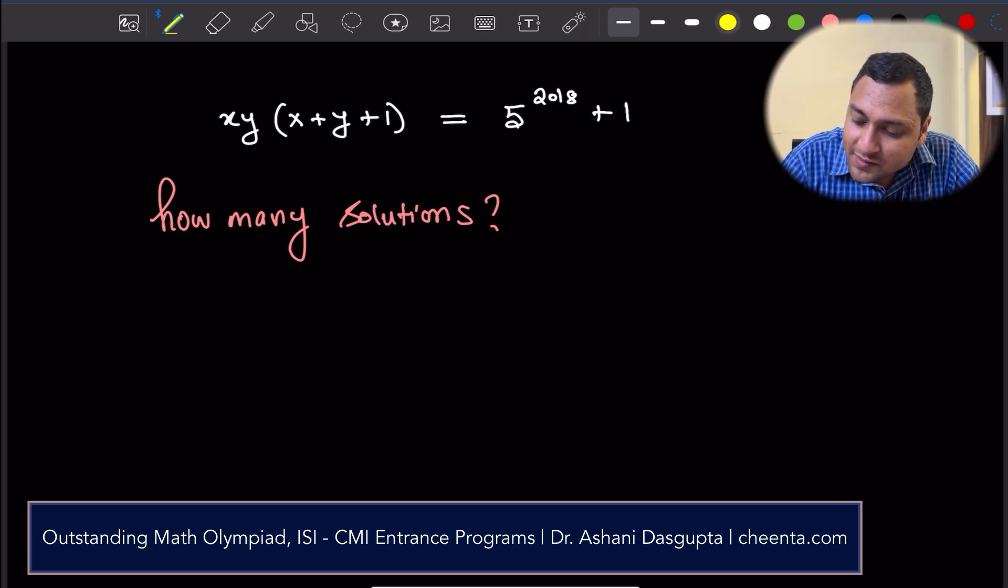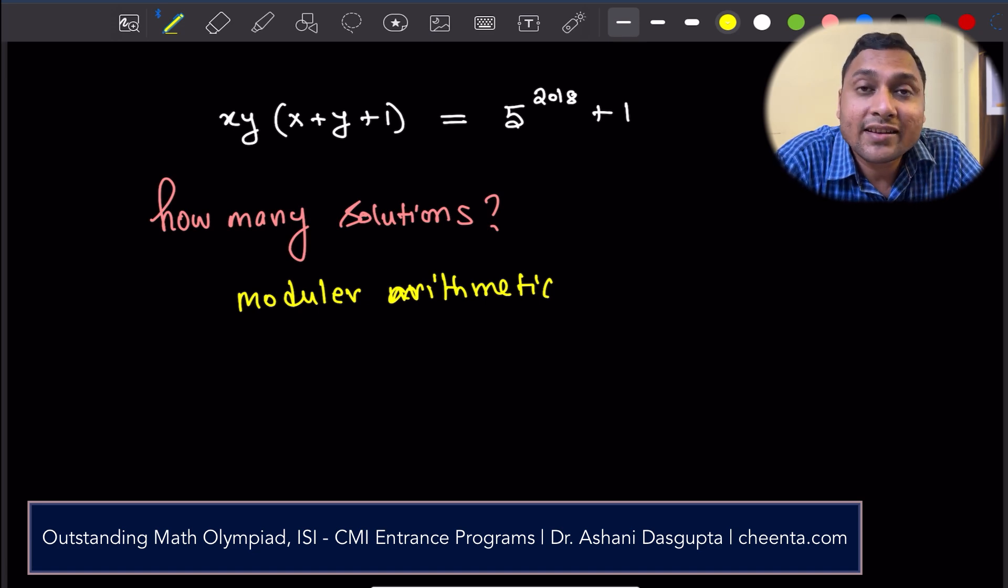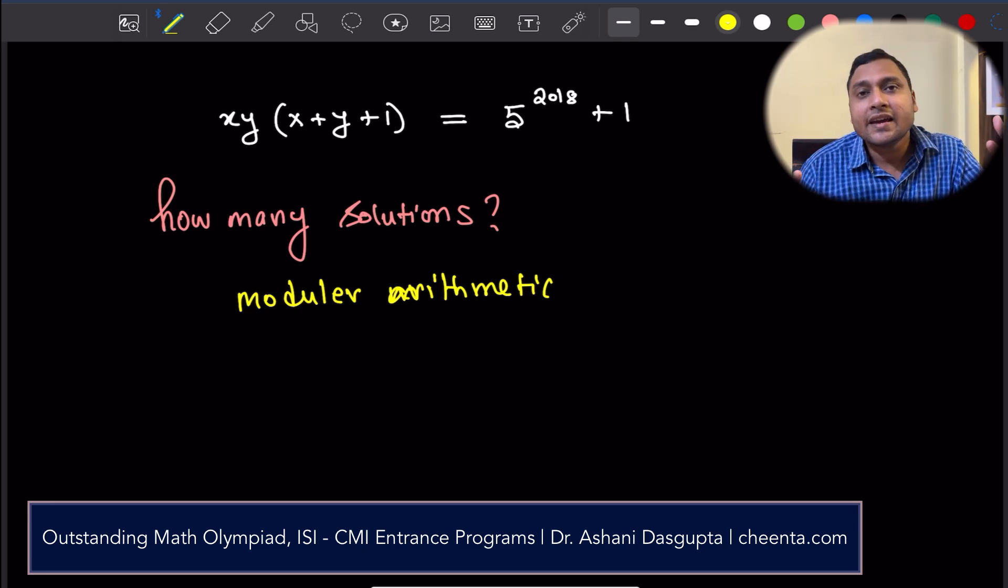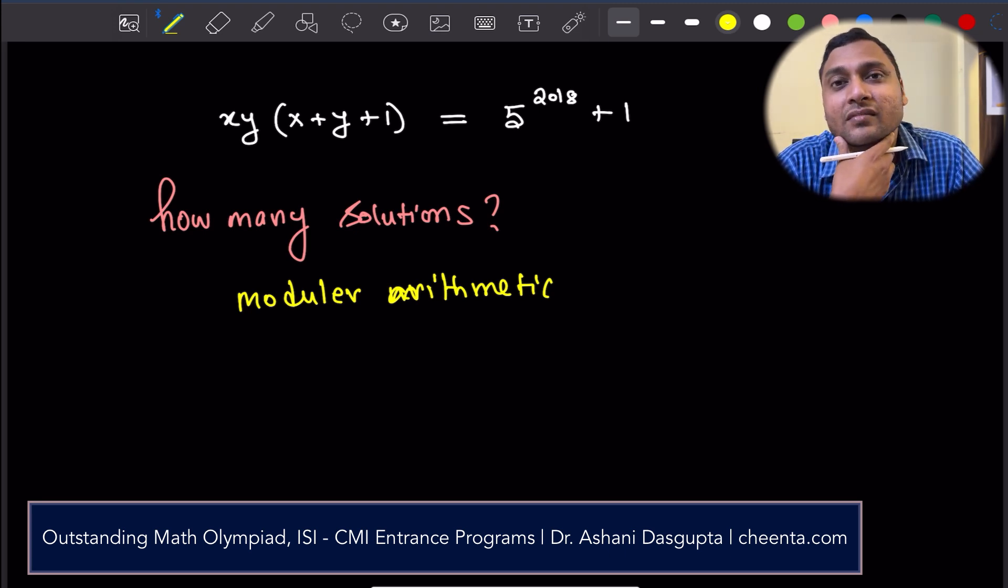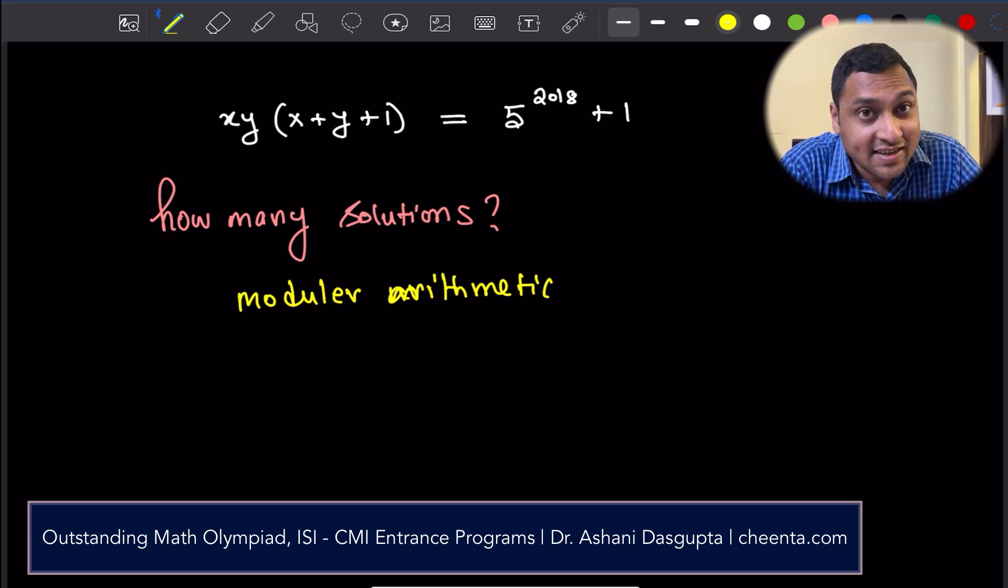We are going to use something called modular arithmetic. It's a very powerful tool. If you do not know modular arithmetic, check the links in the description. You will find many interesting videos and explanations of modular arithmetic. In short, it is a way to combine remainders and do calculations with remainders. And if you can do it, then a lot of complicated number theory problems become much easier. So, let's look at this.